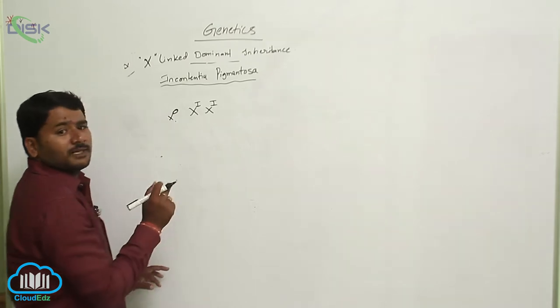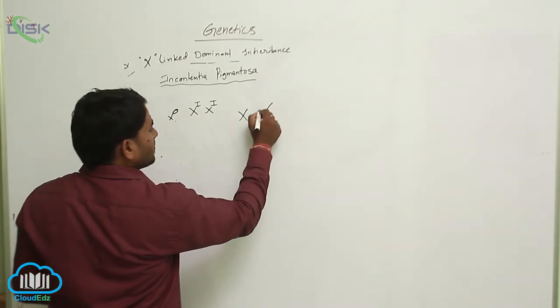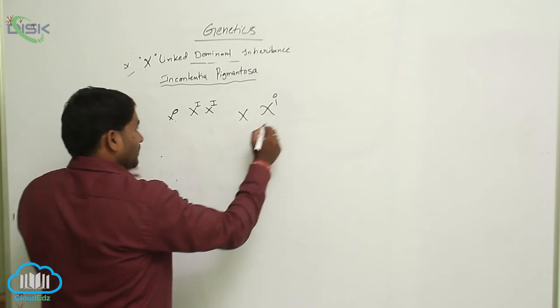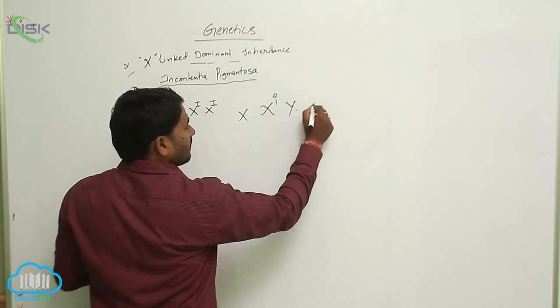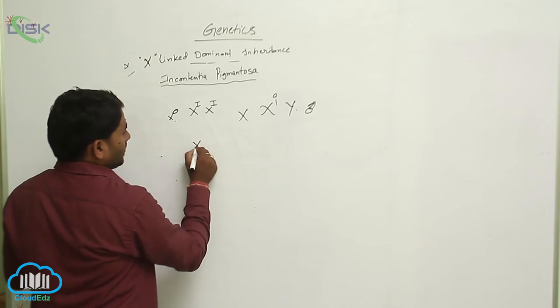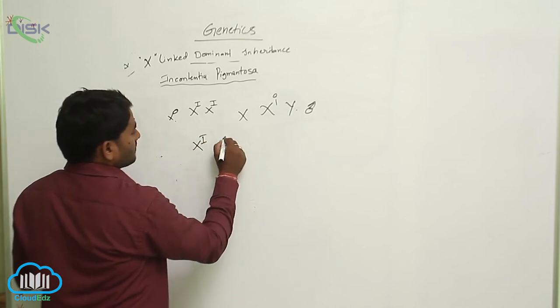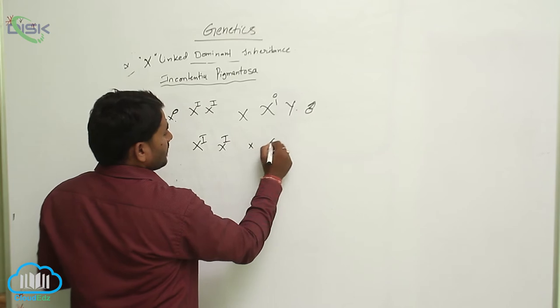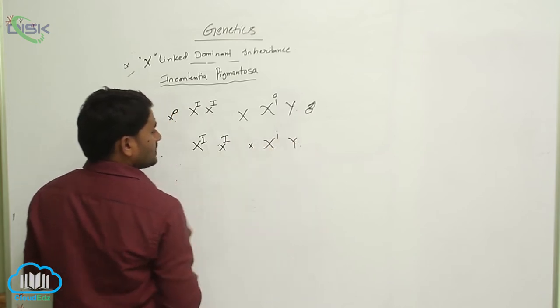This is an affected female crossed with a normal male. Here if you take X^I, these are the gametes. Here X^I, Y are the gametes.